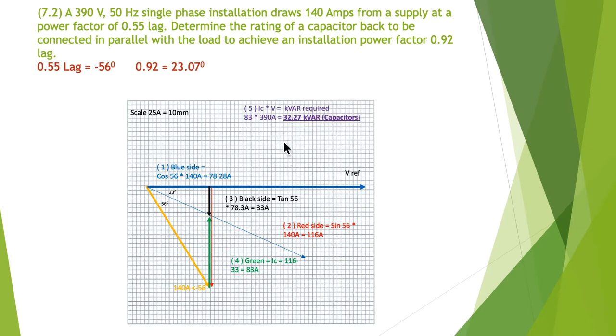Step five: the current times the voltage tells me the kVAR required. My 83 amps multiplied by 390 volts equals 32.27 kVAR. So 32.27 kVAR of capacitors will produce 83 amps of current at 90 degrees, which will drag that up and reduce my angle from 56 to 23 degrees.